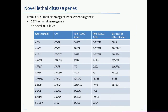Here is a list of novel lethal disease genes we're able to identify — from 399 human orthologs of IMPC-only identified essential genes, we've identified 52 novel ones. I mention GYG1 in particular; unfortunately Mary Dickinson's talk was moved to a different session, but she has great data about how our embryo lethal analysis has informed on this particular disease gene. I encourage you to go see her talk on Friday morning.